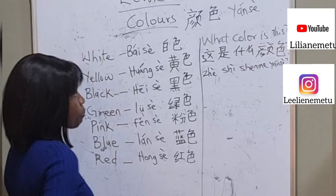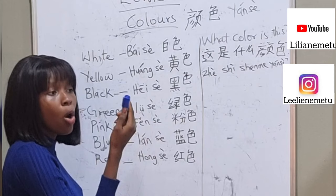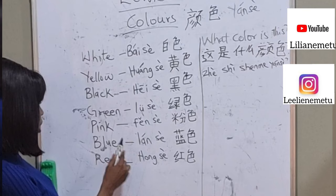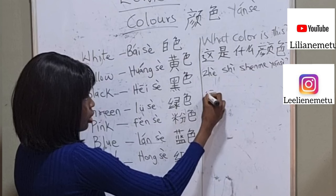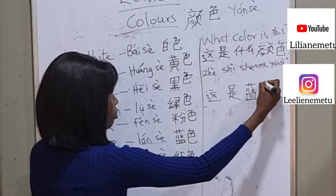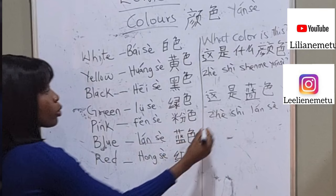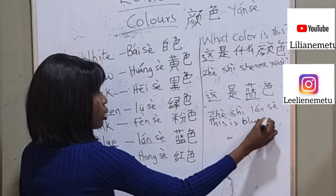Let's go this way — this is blue, right? So Tom is asking you: 'Zhè shì shénme yánsè?' What color is this? You have to reply: this is blue. You say 'Zhè shì lán sè' — this is blue color.